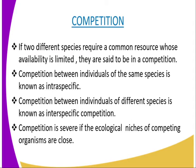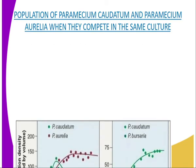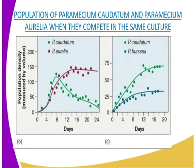In one of the studies on the interaction between populations, experiments were carried out on two closely related species: Paramecium caudatum and Paramecium aurelia, as represented in our diagram. It was observed that when each species is grown separately in controlled cultures with constant food supply, they show normal population growth. However, when they are grown together in the same culture, competition occurs and one species is eliminated, as you can see in our diagram.